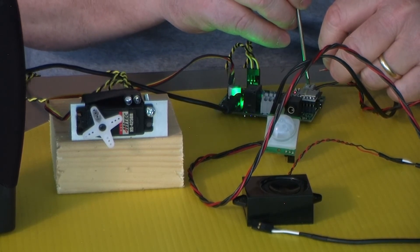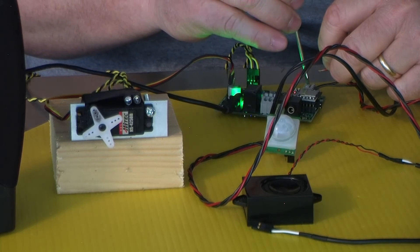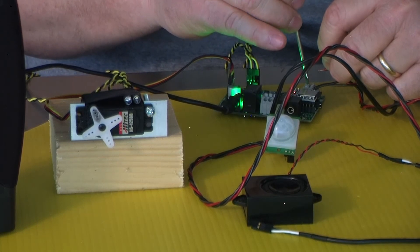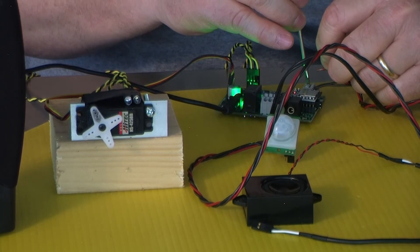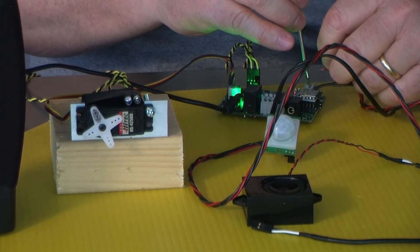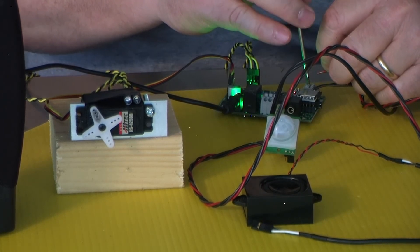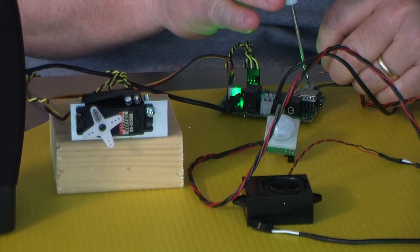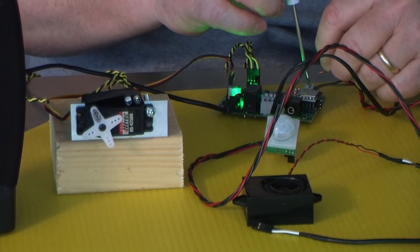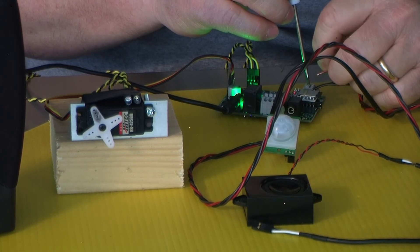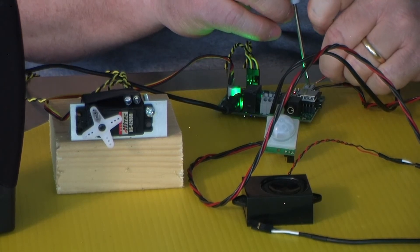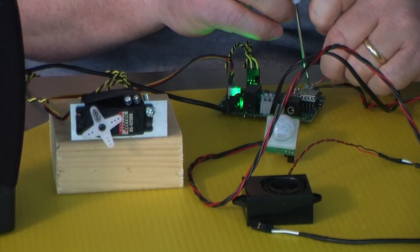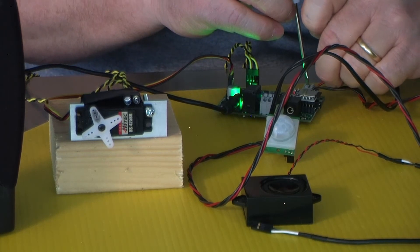So one thing people often forget about these small motion detectors is they can take 30 to 60 seconds in order to stabilize. So during that stabilization time, they may repeatedly trigger or may not trigger at all. So you need to hook it up to power and let it sit for at least 30 seconds, quite often 60 seconds in order to do your tests.